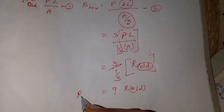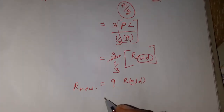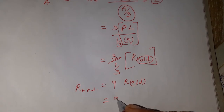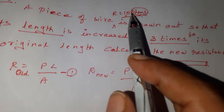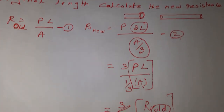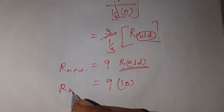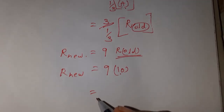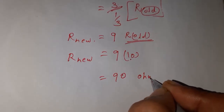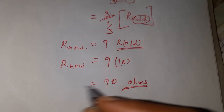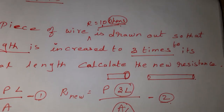So R_new equals 9 times R_old. The old resistance given in the problem is 10 ohms, so R_new equals 9 times 10 ohms. We have calculated the new resistance: 90 ohms. This is your answer.